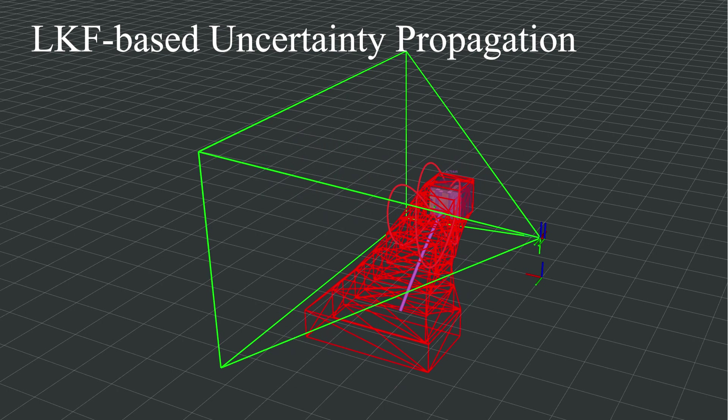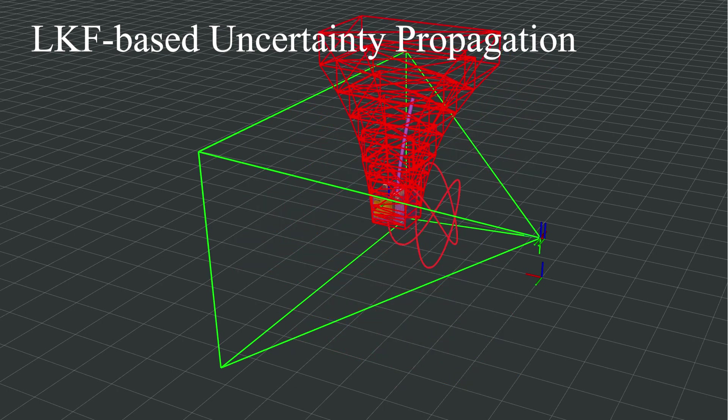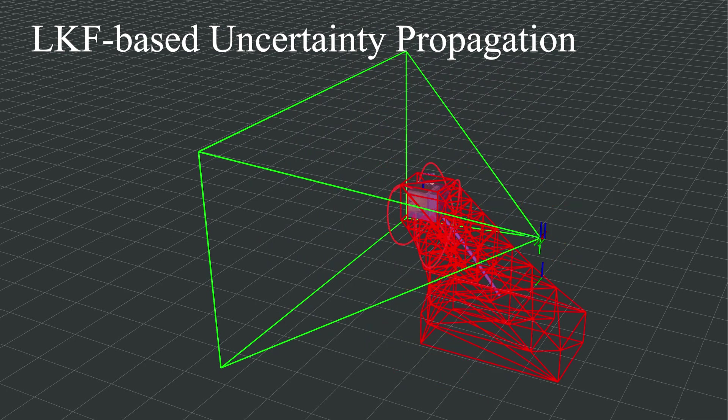We formulated the optimization problem in a way that reduces the uncertainty if the obstacle is in FOV, encouraging the agent to track obstacles if necessary.